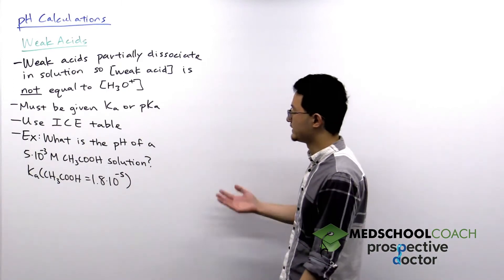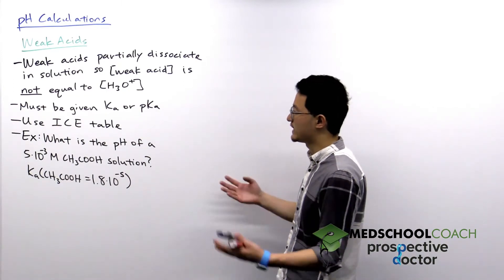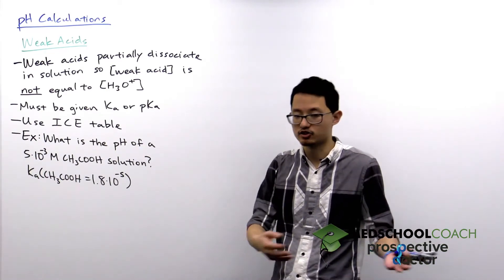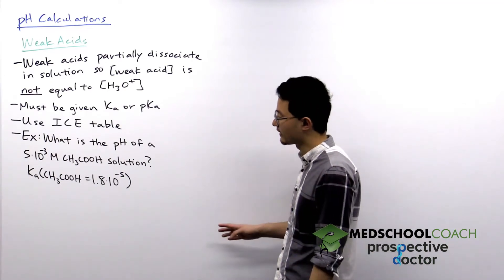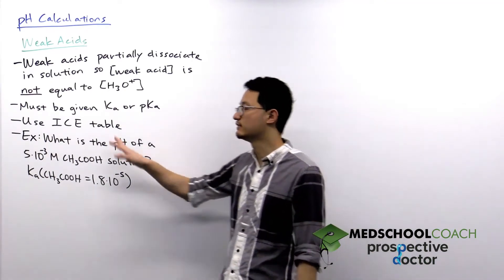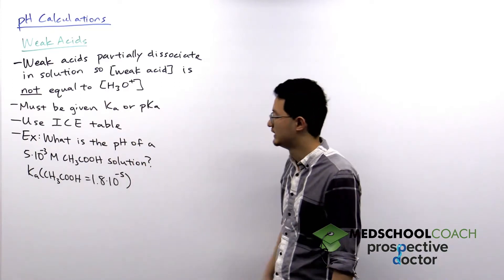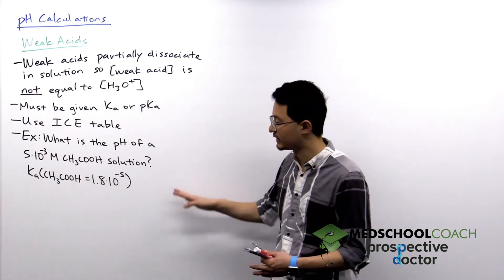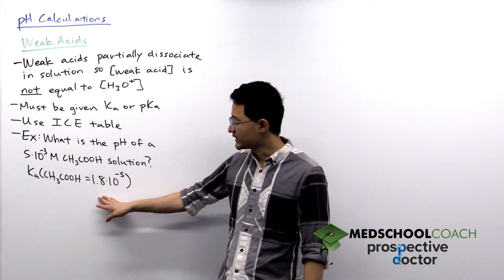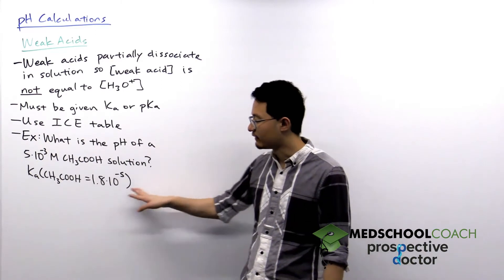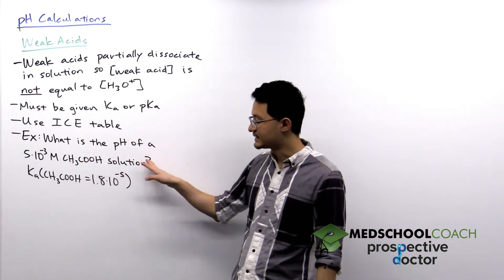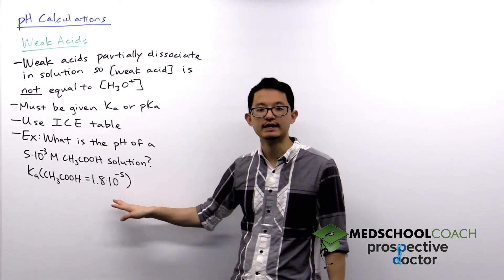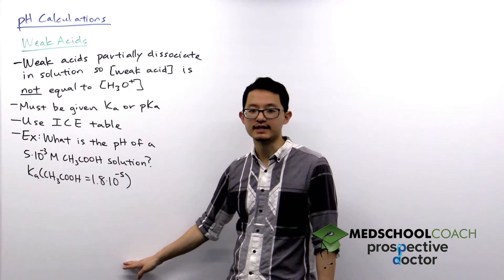Weak acids dissociate to different degrees depending on their identity — some weak acids are stronger, some are weaker. To do the calculation, the MCAT must give you the Ka or the pKa value. We'll do this using an ICE table, which we'll demonstrate with this example: what is the pH of a 5 × 10⁻³ molar acetic acid solution, given that the Ka of acetic acid is 1.8 × 10⁻⁵?